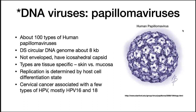First, papillomaviruses. There are about 100 types of human papillomavirus. Papillomaviruses have a double-stranded circular DNA genome of about 8,000 base pairs. It's not enveloped, and it has an icosahedral capsid. The types of tissue that it binds to are specific — either the skin or the mucosa.